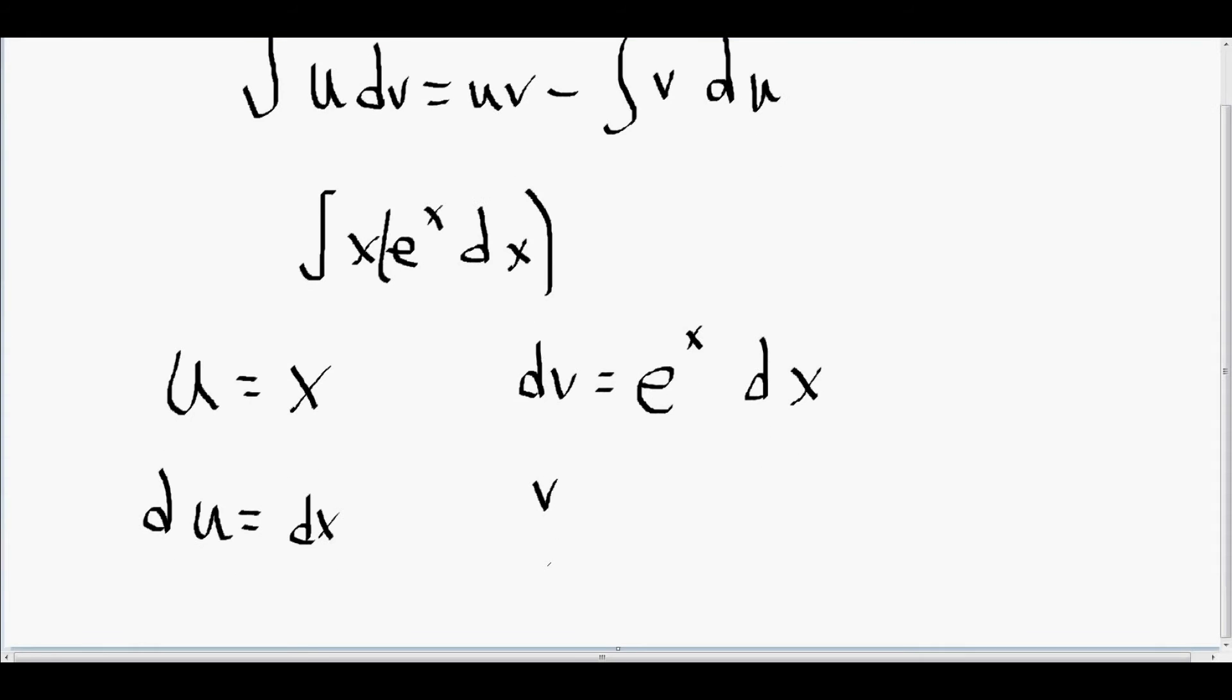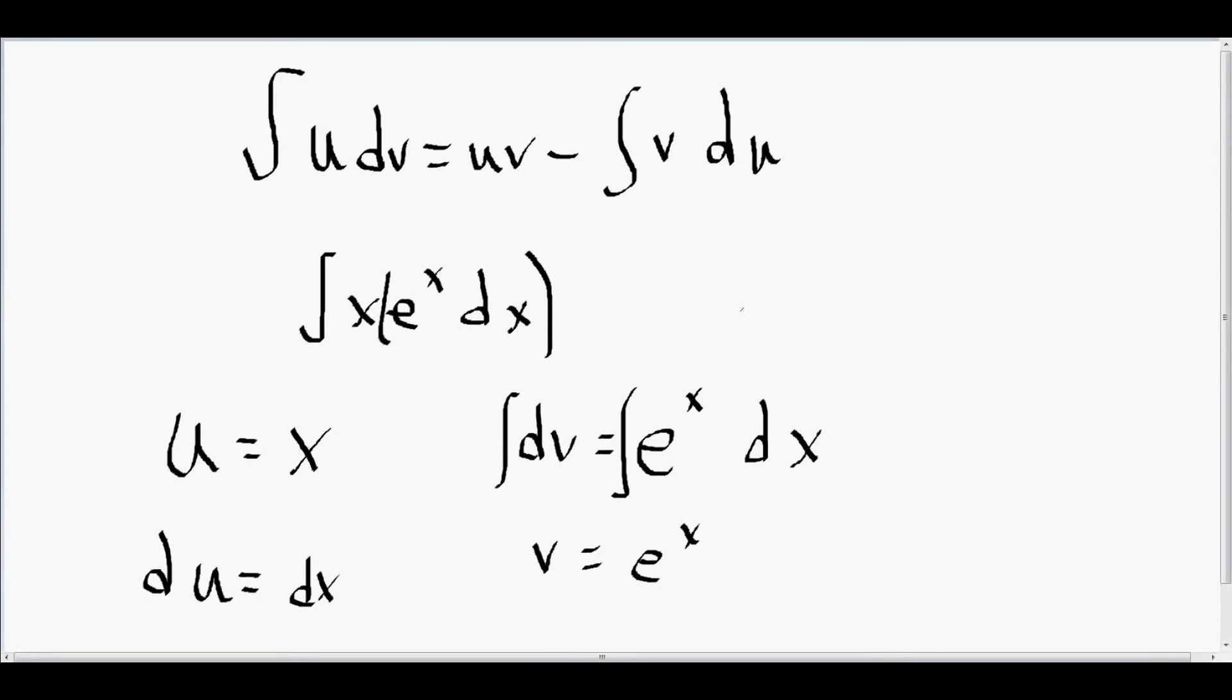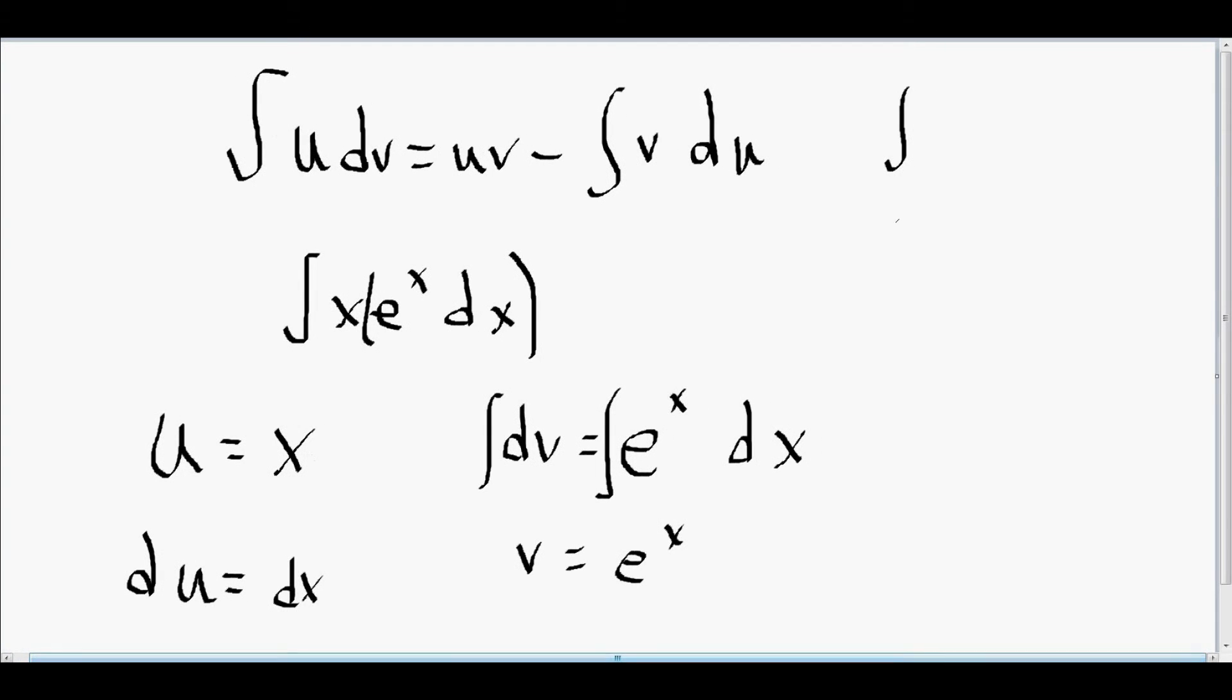Which in this case is e to the x dx. So now to go from dv to v, you just integrate dv. The integral of e to the x dx is e to the x. So now that you have your u and your dv figured out, you just plug into this formula. So integral of u dv, that's x times e to the x, equals u times v, x e to the x, minus the integral v du, which is e to the x dx.